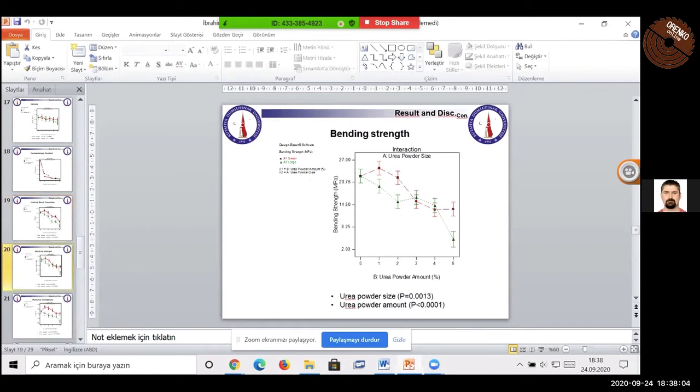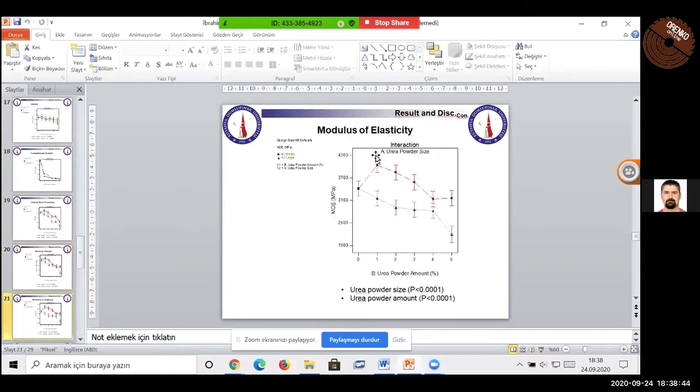For the bending test, both UREP powders size and amount had significant effect on the bending strength properties. With the addition of UREP powders, bending strength properties were reduced, but all the manufactured boards provided standard requirements except large size with five percent using. From here you can see. The standard value for the bending strength is 13 megapascal. This is the modulus of elasticity.